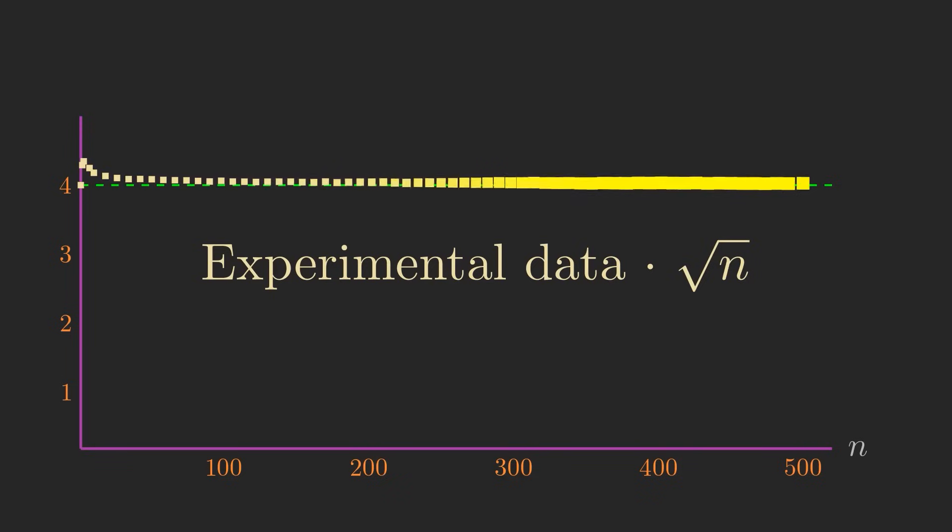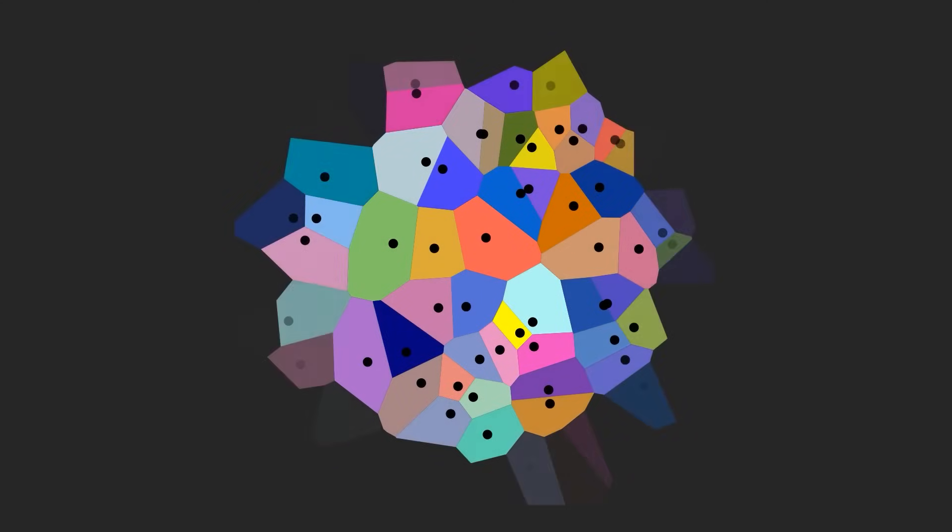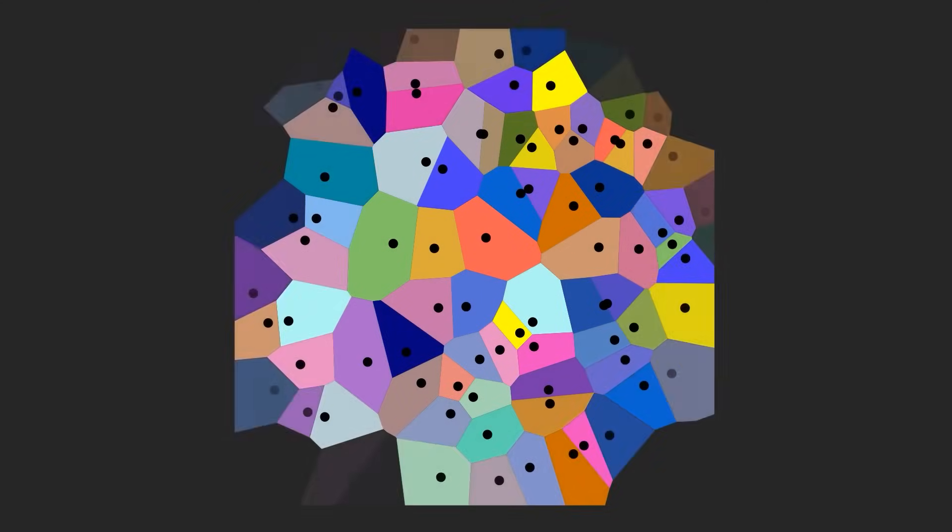Now some of you may be thinking, well maybe it's not so surprising that assuming all of the cells look like squares is a good approximation given that the overall bounding region of the Voronoi diagram itself is a square. So let's do the test again, this time where the bounding region is a circle.